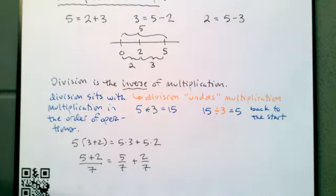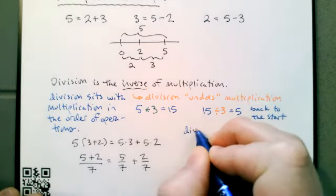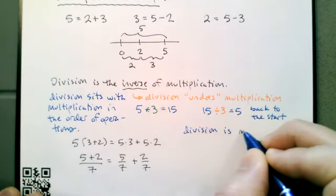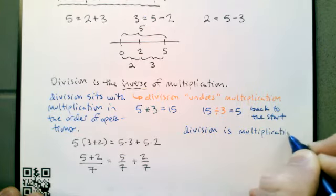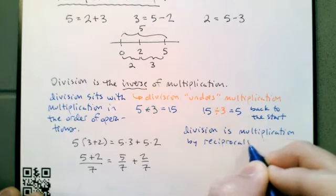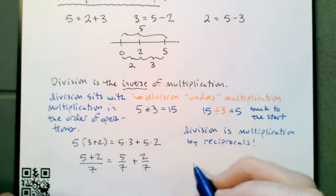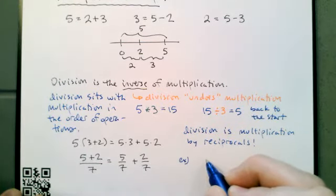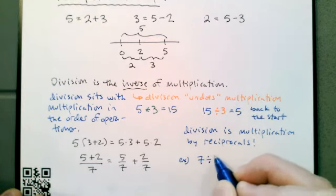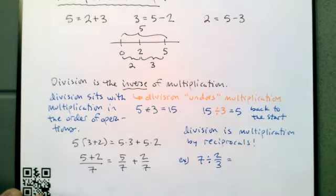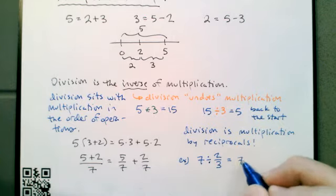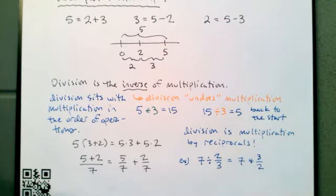Just like we can think of subtraction as the addition of opposites, we can think of division as multiplication by reciprocals. For example, 7 divided by 2/3 — the trick is to multiply by the reciprocal because division is just multiplication by reciprocals. That's because division is the inverse of multiplication. So 7 divided by 2/3 is just 7 times 3/2. 2/3 and 3/2 are reciprocals.